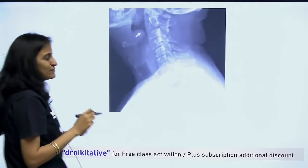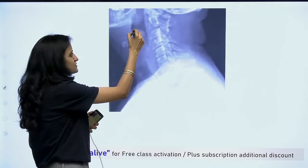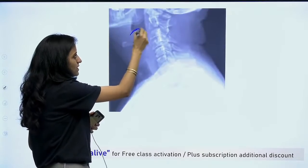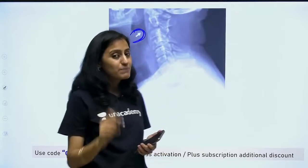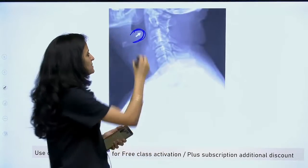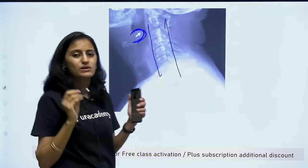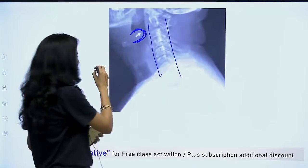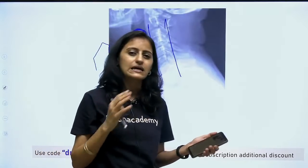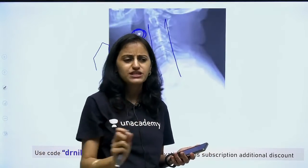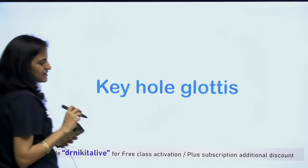When we see laryngotracheobronchitis, we also need to know the thumb sign — this is the epiglottis which is inflamed. That is your epiglottitis thumb sign. Remember, the thumb sign is seen on the lateral X-ray, while the steeple sign is on the frontal radiograph. That is an important clue to differentiate the two.